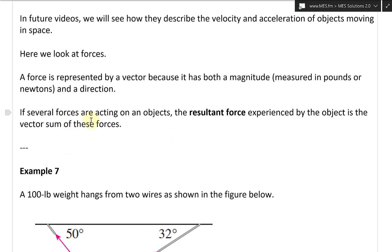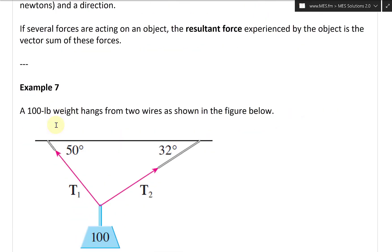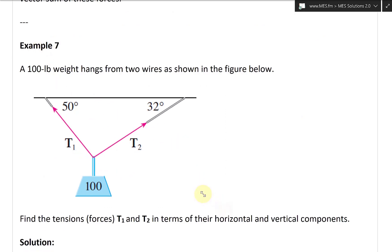If several forces are acting on an object, the resultant force experienced by the object is the vector sum of these forces. And that brings us to example 7.